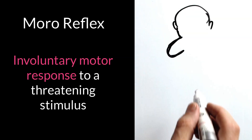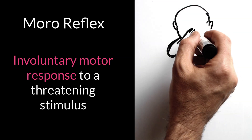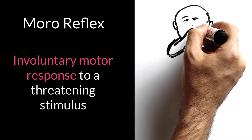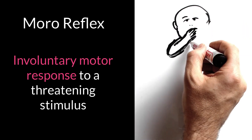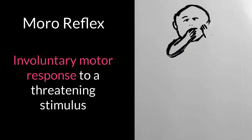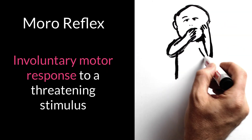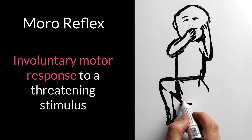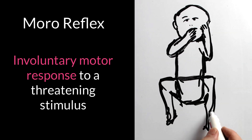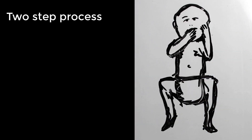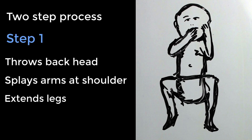The Moro reflex is an involuntary motor response or natural action of the baby to a threatening stimulus such as a noise or a sudden movement. It is a two-step process and develops shortly after birth.